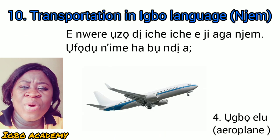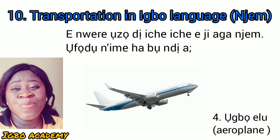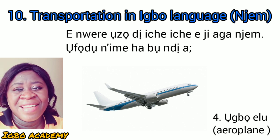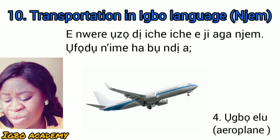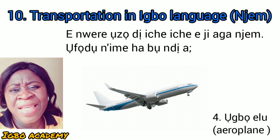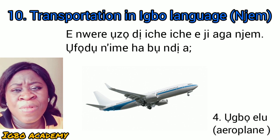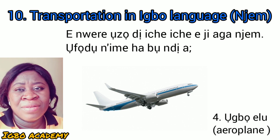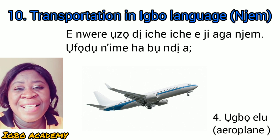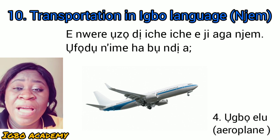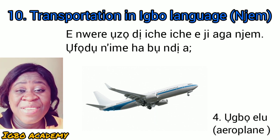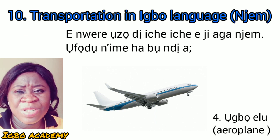Then we have the aeroplane — the aeroplane or anything that flies in the air. The aeroplane is called Uwamili. So anything that flies in the air, even if it is a helicopter, anything that flies in the air that you can use as a means of transportation, it is called Uwamili.